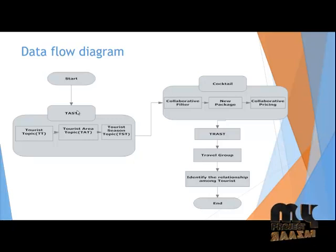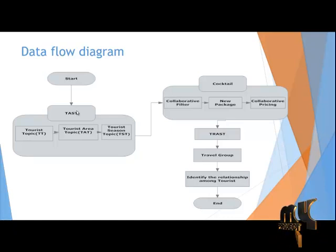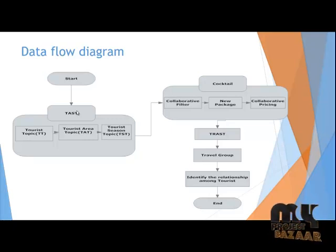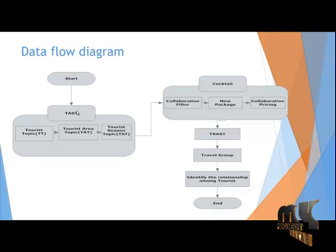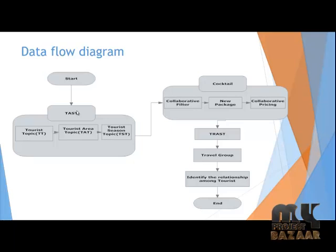The cocktail approach has the ability to combine many possible concerns that arise in real-world scenarios. The first component is collaborative filtering — we describe the method for generating the personalized candidate packages for each tourist. Based on the user need, we create new packages for the user. Next, we go for the collaborative pricing method, where we split the price into a price rate based on user needs.